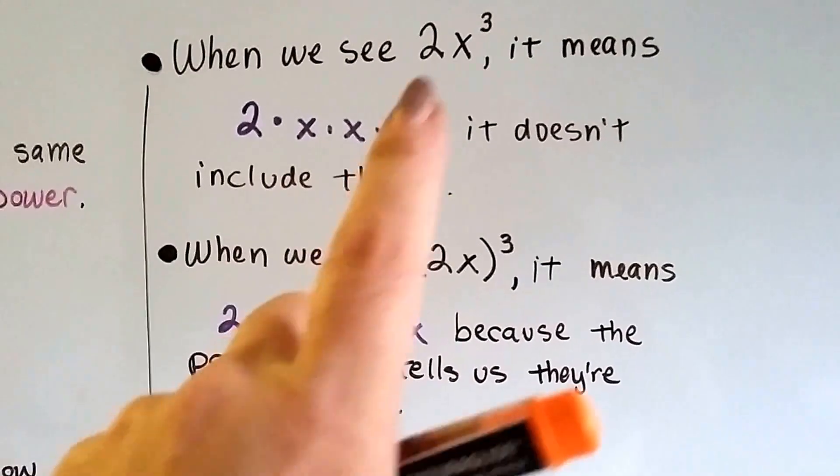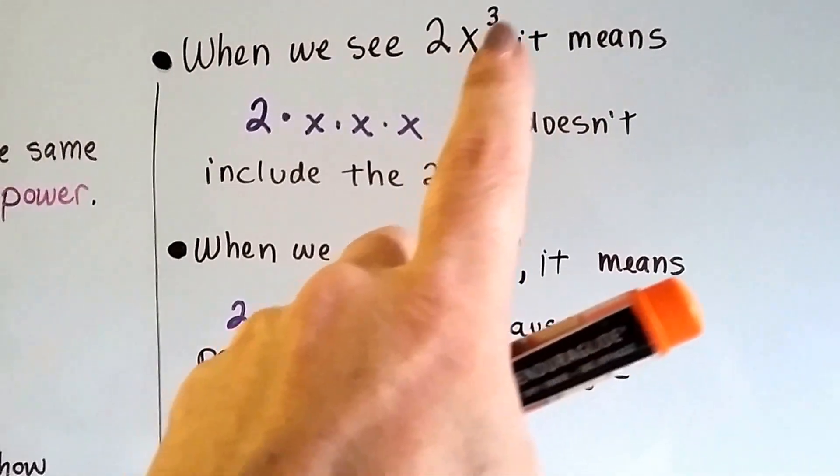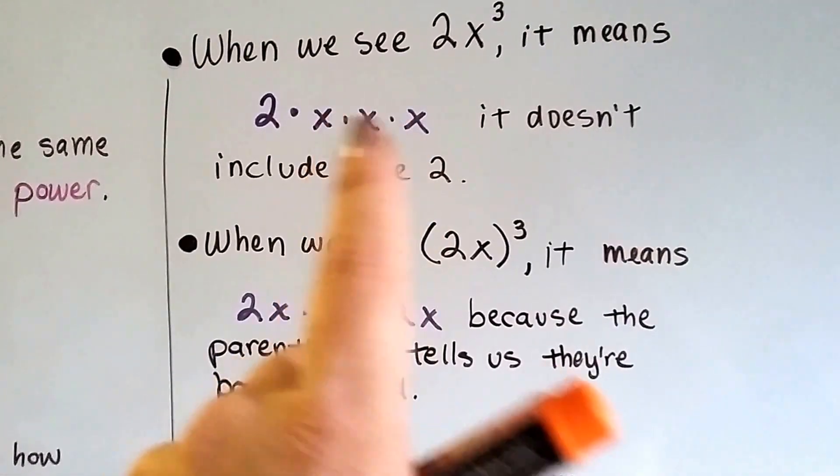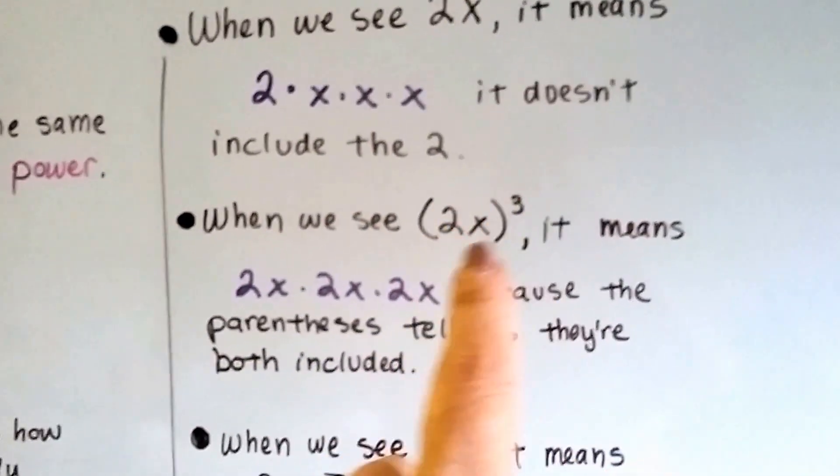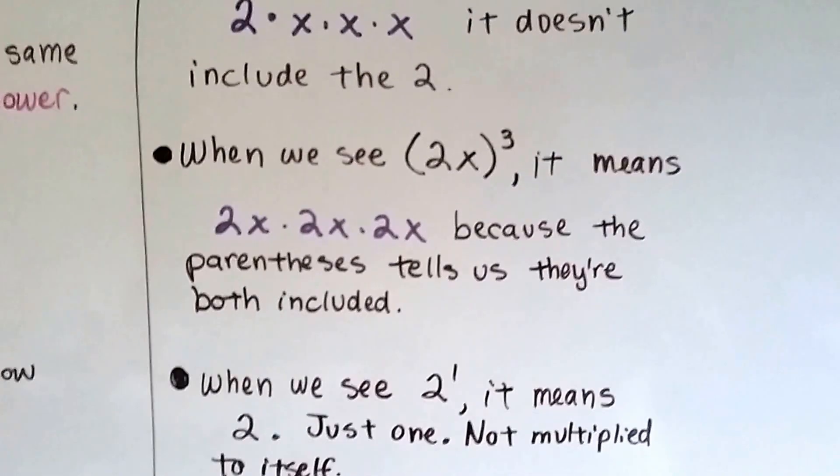See? When it's just on the outside with the x, it's just the x that's multiplied to itself three times. When it's in parentheses, the whole thing is multiplied to itself three times.